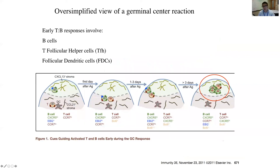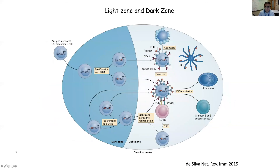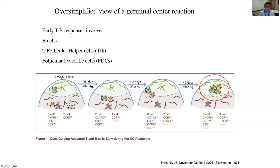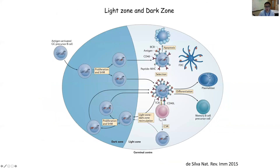After approximately three days, B cells have gone to the T-B border and returned to the B cell follicle; T cells have differentiated into TFH cells, downregulated CCR7, and upregulated CXCR5 to enter the germinal center. Within the germinal center there are subdivisions called the light zone and dark zone. The dark zone contains only B cells with no T cells present, whereas the light zone contains CD4-positive TFH cells.